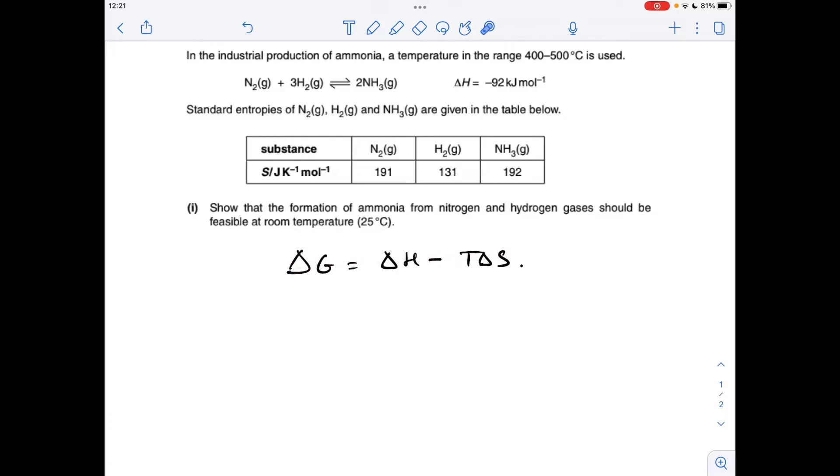So we're going to use the Gibbs equation, and we're going to calculate delta G for this temperature. And if it's zero or less than zero, i.e. negative, the reaction is feasible at that temperature.